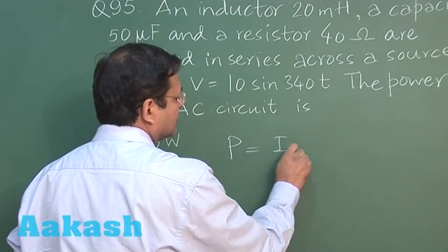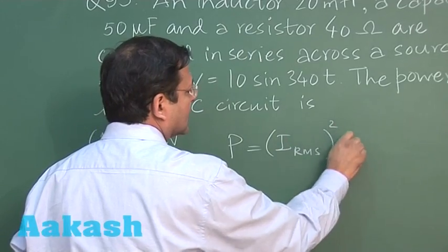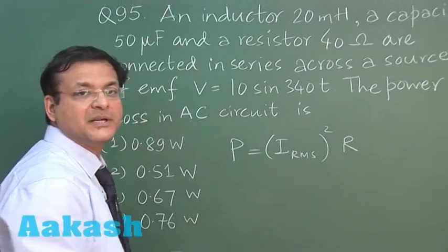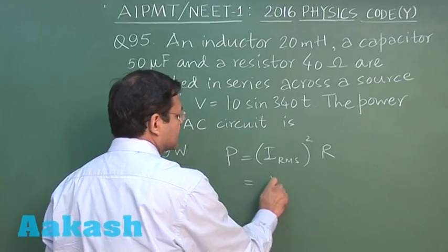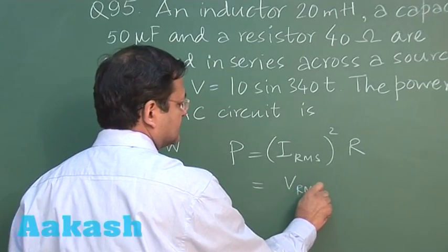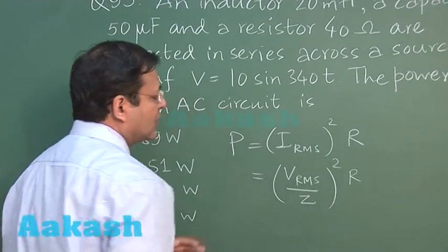I rms has not been given to you directly, so you can use V rms by z whole square r. This is what you have to calculate.